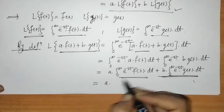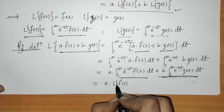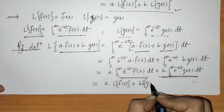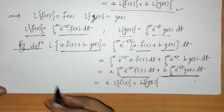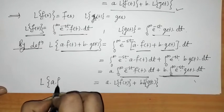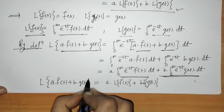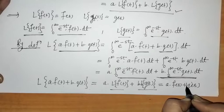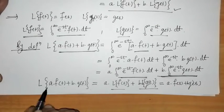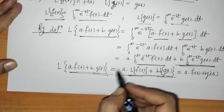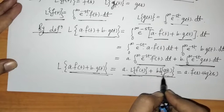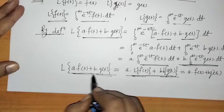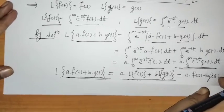So we get a·L{f(t)} + b·L{g(t)}, which equals a·F(s) + b·G(s). This confirms that the Laplace of a linear combination of two functions equals the linear combination of their Laplace transforms. In simple words, we can operate the Laplace transform separately on each function. This property can be generalized to any finite number n of functions.